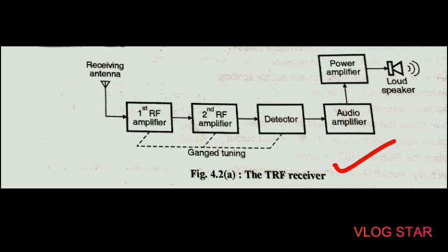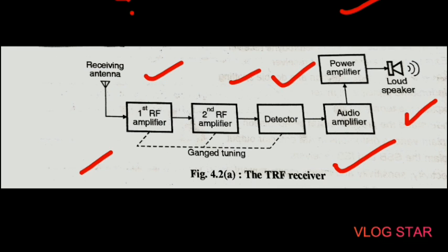Let us discuss them one by one. The first is the TRF receiver — Tuned Radio Frequency receiver. The block diagram of this TRF receiver is shown in the figure. As seen, this receiver consists of two or three tunable RF amplifiers — a first RF amplifier and a second RF amplifier. These amplifiers are tuned simultaneously to the desired signal frequency. A detector, AF amplifier, and power amplifier follow the tuned RF amplifiers.